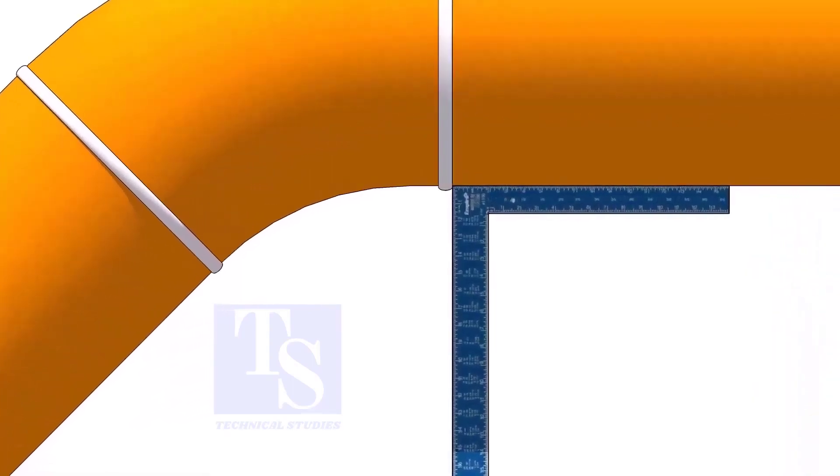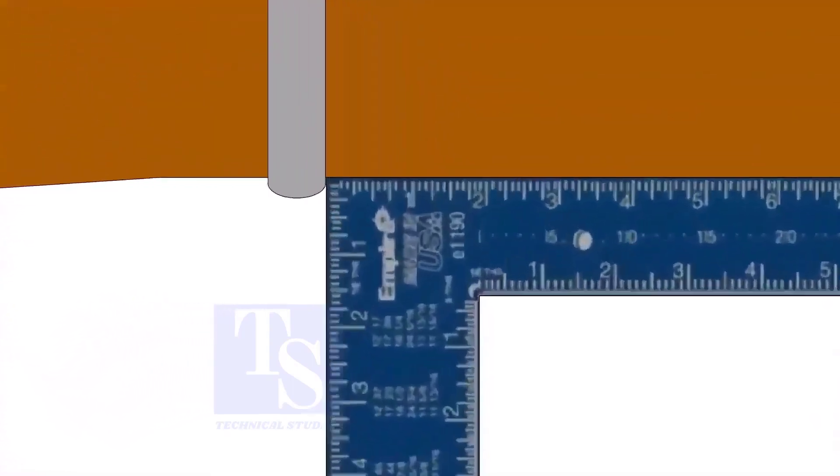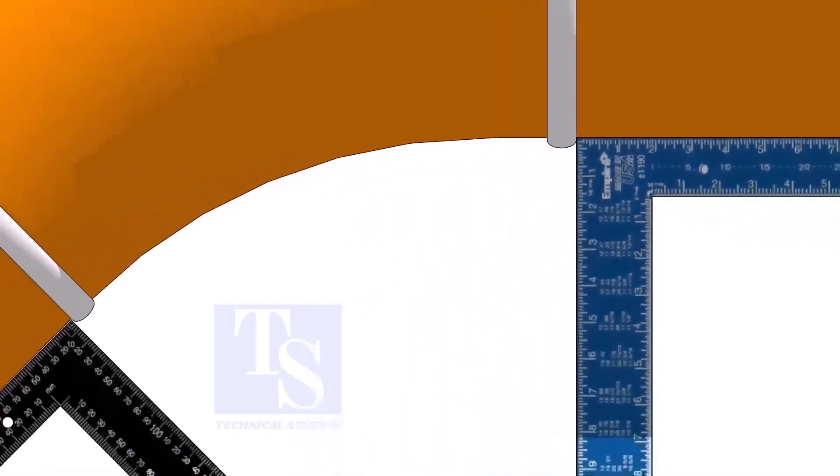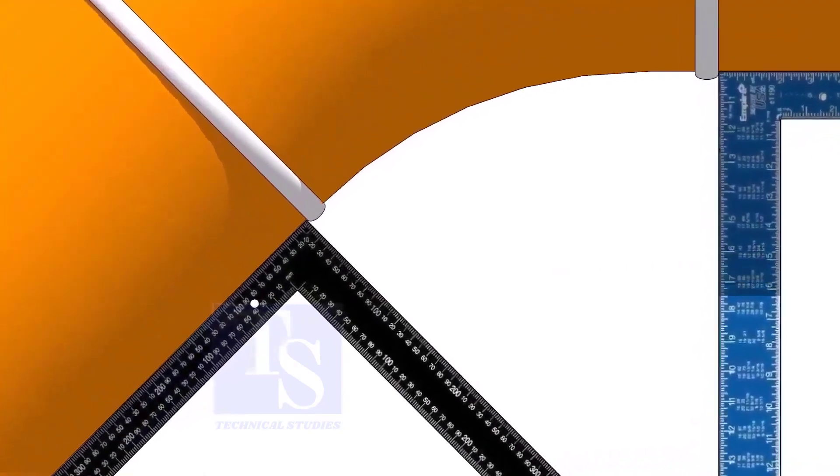Hold one right angle on the pipe just outside the weld joint, as shown. Hold another right angle on the other pipe. Make sure both right angles are sitting on the center of the pipe.